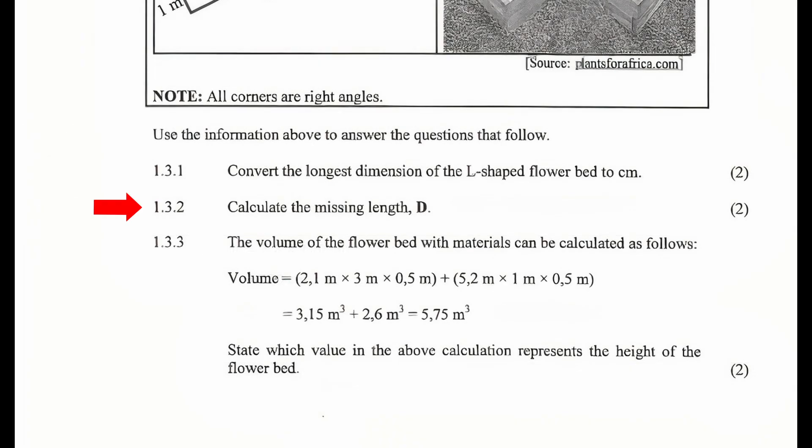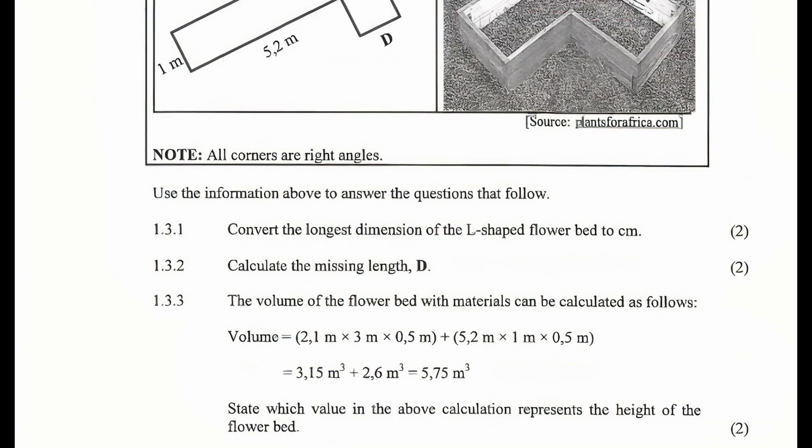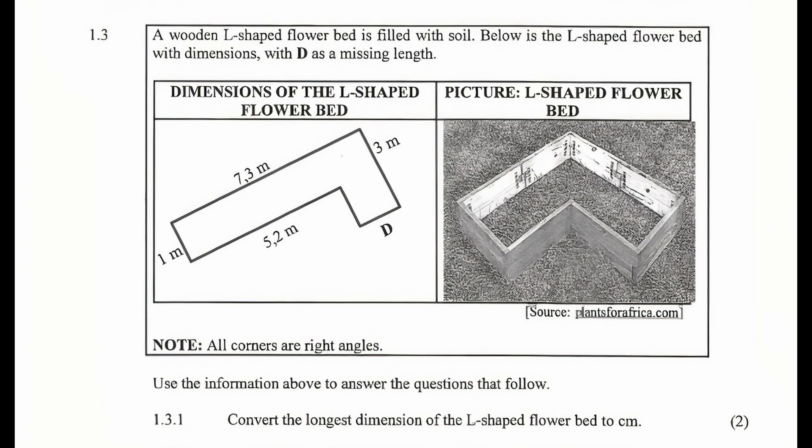1.3.2: Calculate the missing length D. From the diagram with the dimensions in the table, the length of the longer side is equal to the length of the two sides parallel to it. We can write this as 5.2 meters plus D equals 7.3 meters. If we subtract 5.2 meters from both sides of this equation, then the equation can be simplified to D equals 2.1 meters.